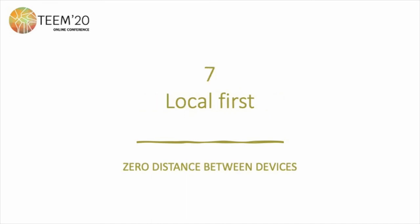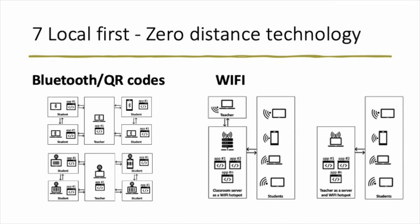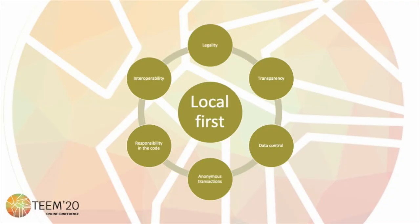And then we have the seventh principle, the most important in this framework, because all the other points are orchestrated by this: local first. Local first is the idea about zero distance between devices. Let's think about an edtech application used in a classroom — usually these kinds of applications use cloud computing. Our idea is that the data is not transferred to the cloud, but only transferred to the devices that are near the students. And of course, local first has to be seen at the center with the other principles orbiting it.